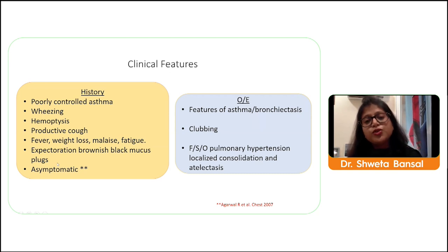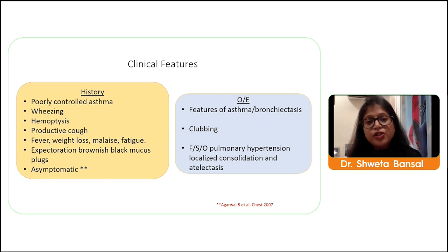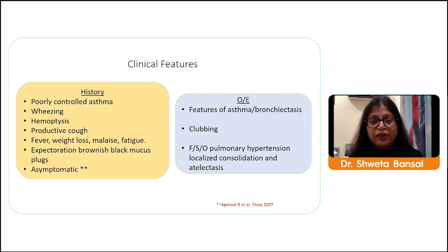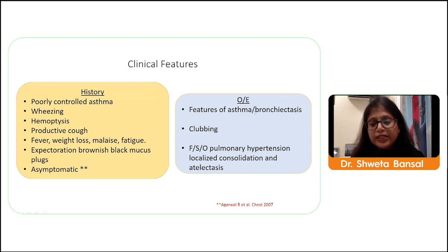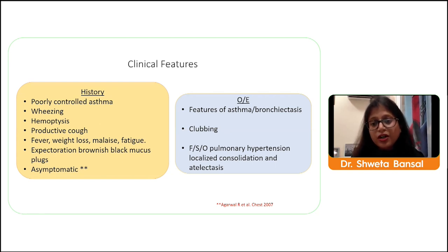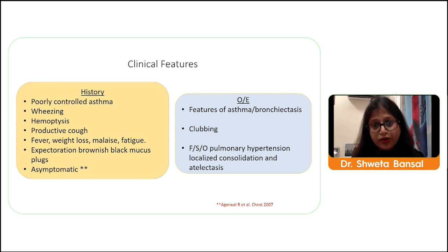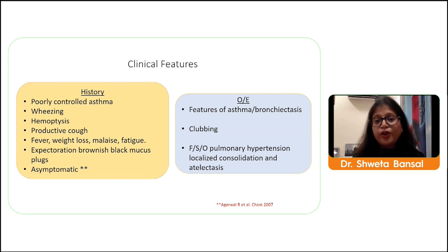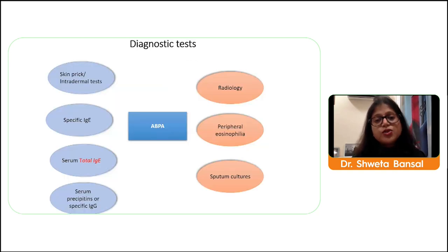Some patients may be asymptomatic; look for eosinophilia or markedly high IgE levels in such patients. On examination, apart from features of asthma and bronchiectasis, you may find clubbing — indicating end-stage disease — or features of pulmonary hypertension or atelectasis. These findings should trigger screening for ABPA.